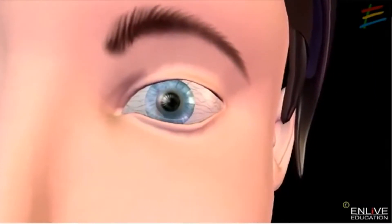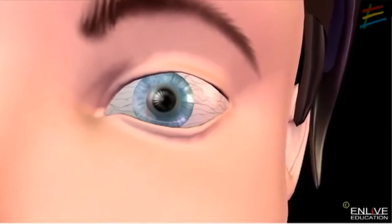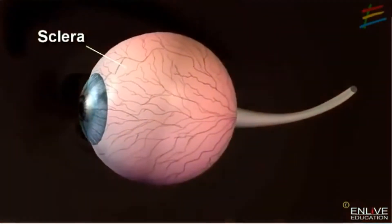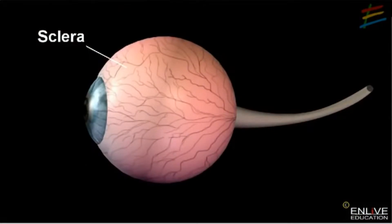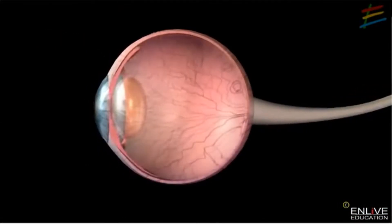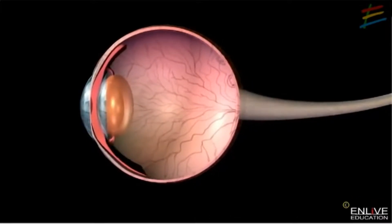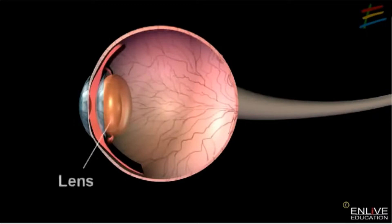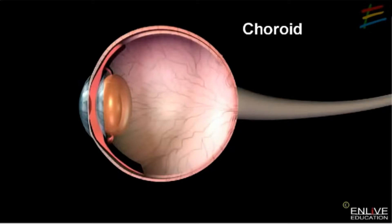The capsule of the eyeball has three layers. This thick tough outer layer is called the sclera and serves to protect the delicate structure within. This transparent bulging portion is called the cornea. There is also a crystalline lens, which is one of the main parts of the human eye.